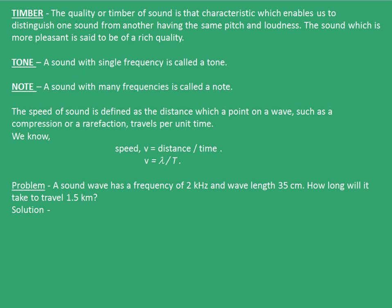Now let's move on to the term timbre. The quality or timbre of sound is that characteristic which enables us to distinguish one sound from another having the same pitch and loudness. The sound which is more pleasant is said to be of rich quality. A sound with single frequency is called a tone. A sound with many frequencies is called a note.